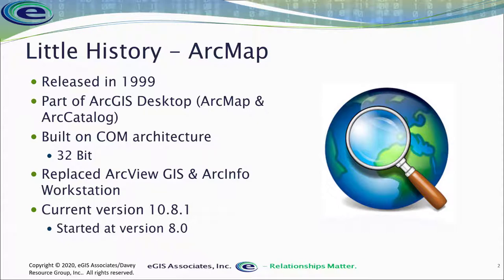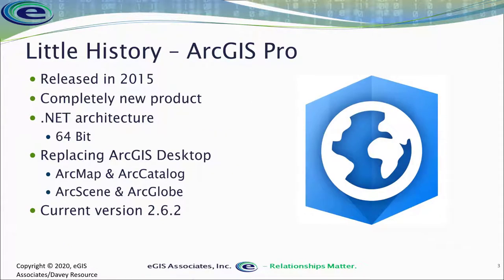Now let's take a look at Pro. ArcGIS Pro 1.0 was first released in 2015. It is absolutely a new product — not just an upgrade or improvement over the older ArcMap. It's brand new, built on a .NET platform instead of the COM platform used with ArcMap. Being this newer .NET architecture really opens up the ability of ArcPro to take full advantage of current technologies.